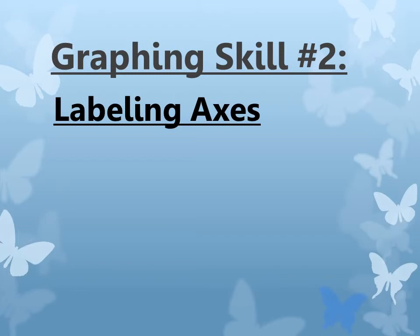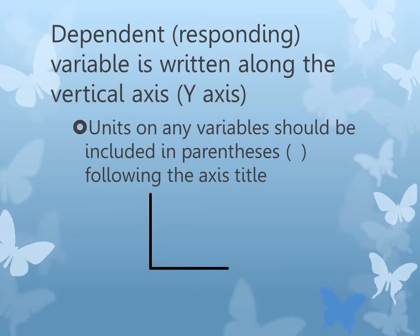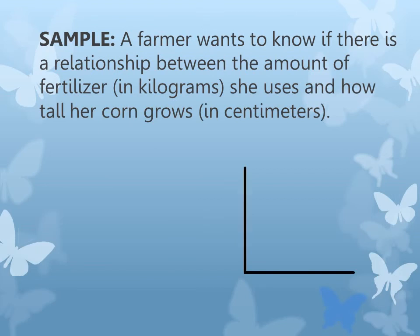The second skill we're going to talk about is labeling axes. When labeling your axes, keep three things in mind. First, the independent variable — the one you change or manipulate — goes along the horizontal axis, which is the x-axis on the bottom. The dependent variable — the one that responds — goes along the vertical axis or y-axis. And the units for any variable should be written in parentheses along the axis. That's the most important thing.